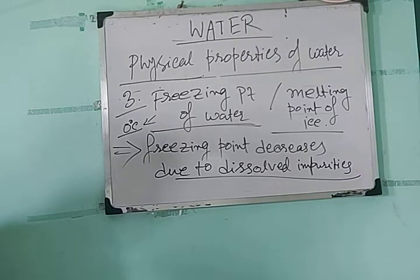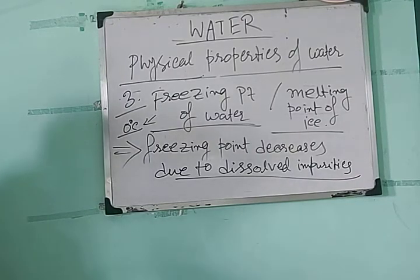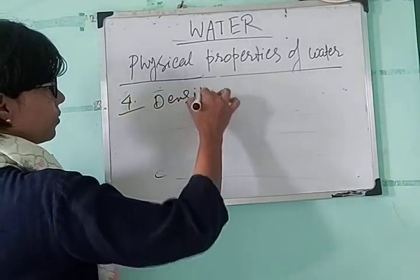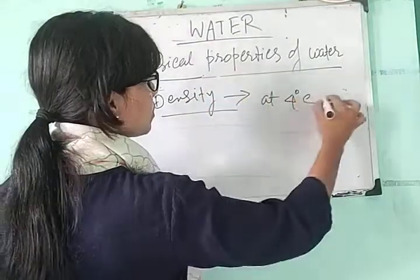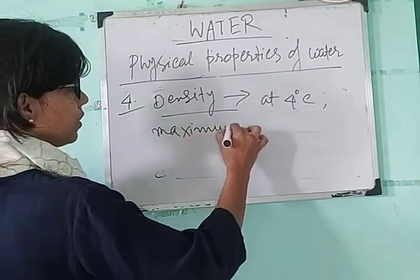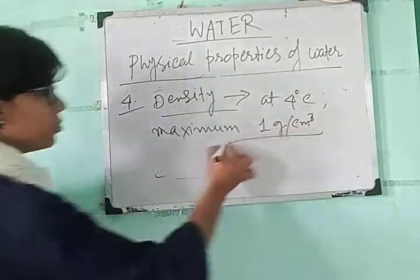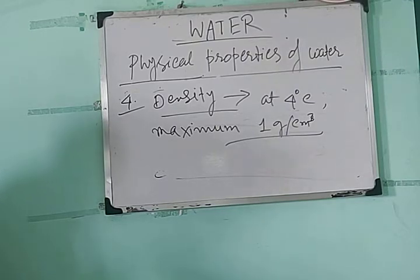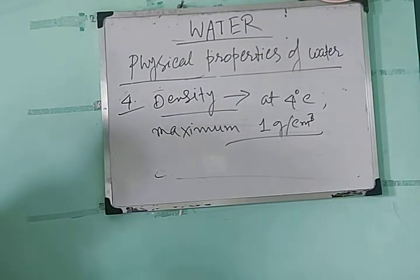The next physical property is density. At 4 degree Celsius, water has maximum density, which is 1 gram per centimeter cube. If you alter the temperature from 4 degree Celsius — either decrease or increase it — the density will decrease. Below 4 degree Celsius, density decreases, and above 4 degree Celsius, density also decreases. We will discuss how density depends on temperature in the next video.